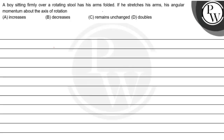Let's see the question. The question says: a boy sitting firmly over a rotating stool has his arms folded. If he stretches his arms, his angular momentum about the axis of rotation will — increase, decrease, remain unchanged, or double?